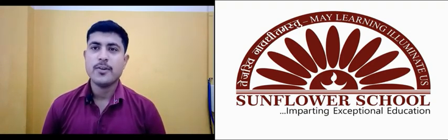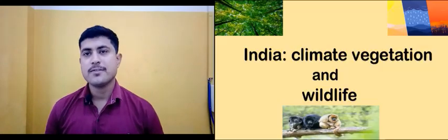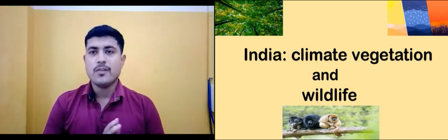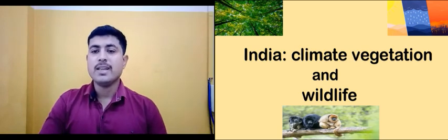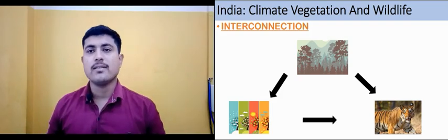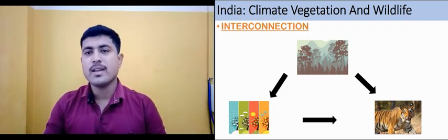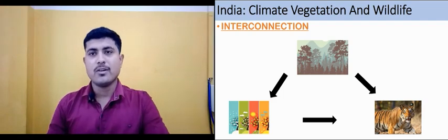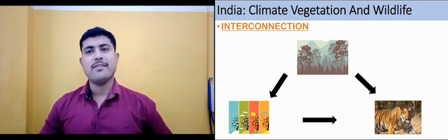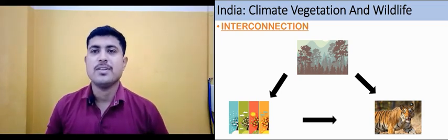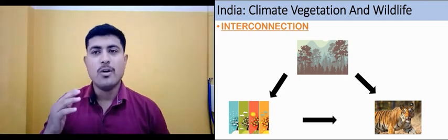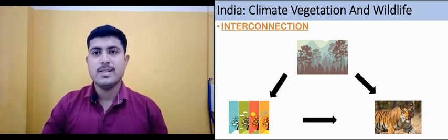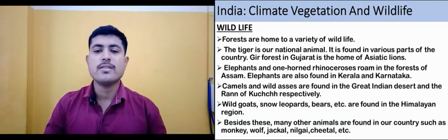Hello learners, I hope you all are doing good. This is the third and last part of India: Climate, Vegetation and Wildlife. In this video we are going to see the connection between climate, vegetation and wildlife — how these are interconnected. According to the climate of a particular area, the vegetation takes place, and according to the climate, the wildlife exists, as shown in the chart.